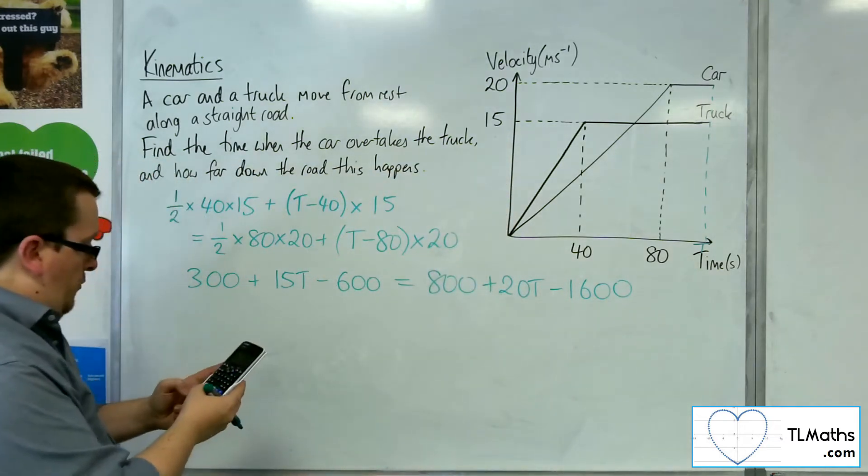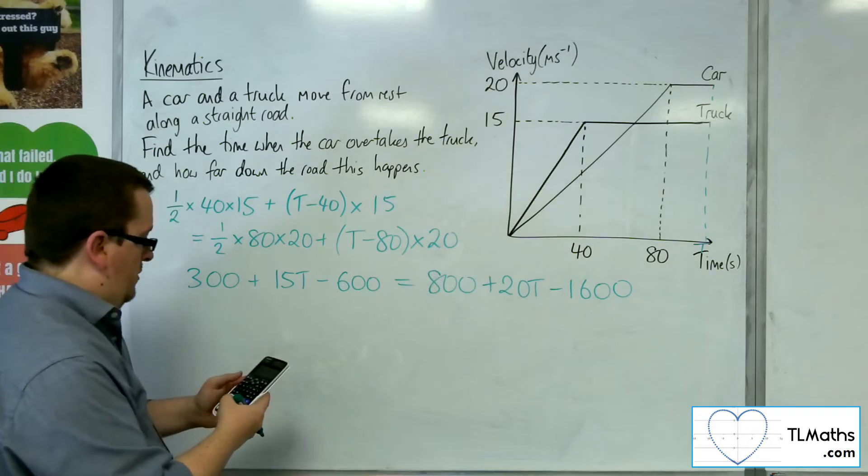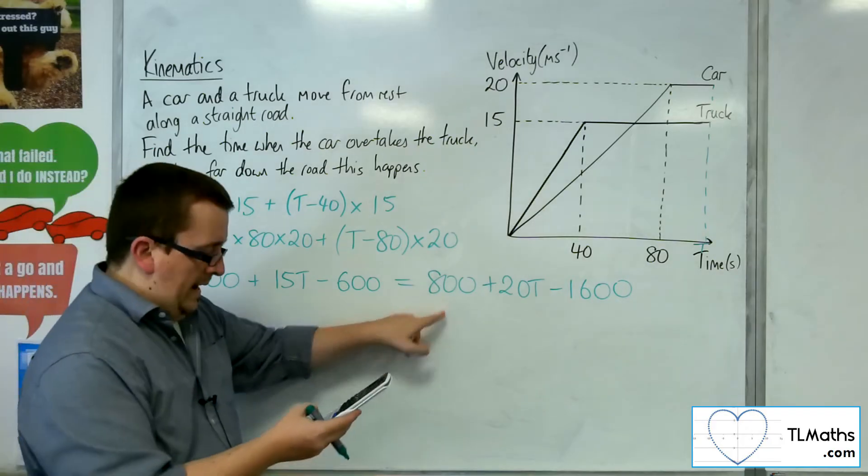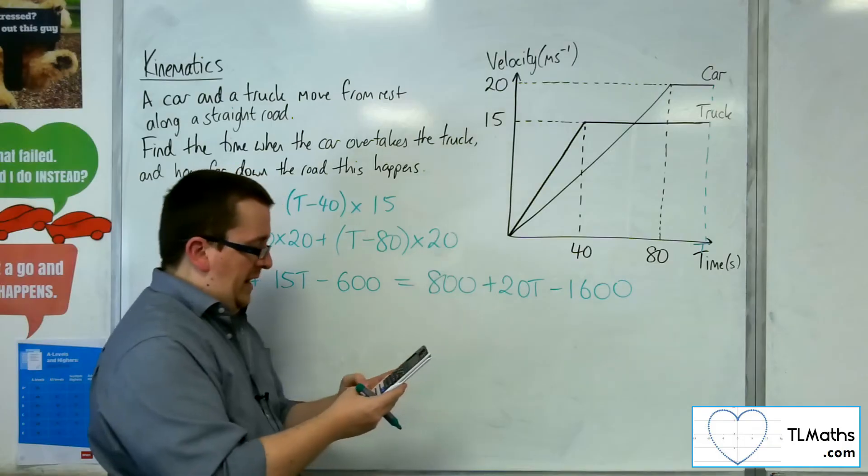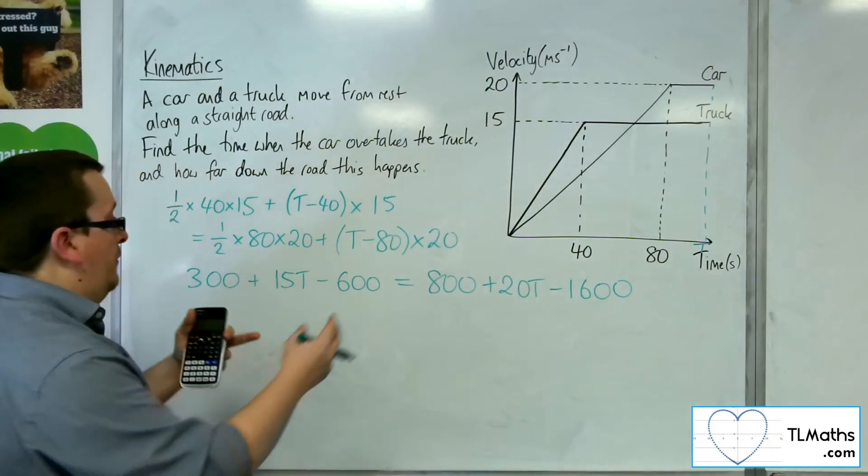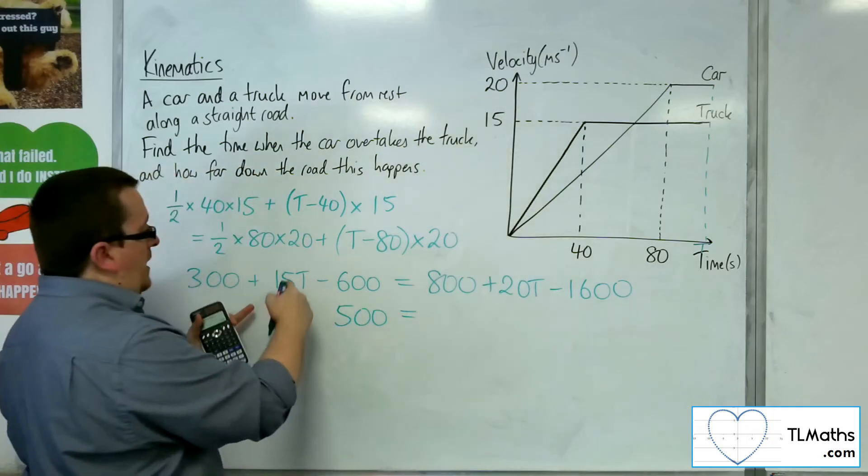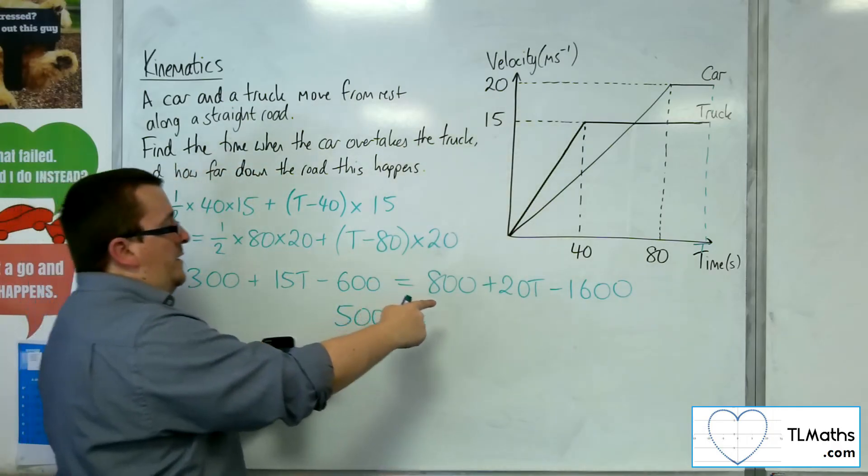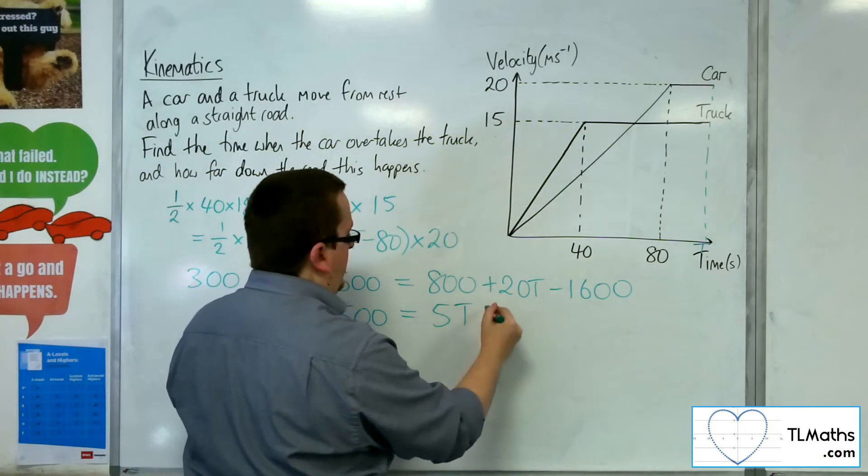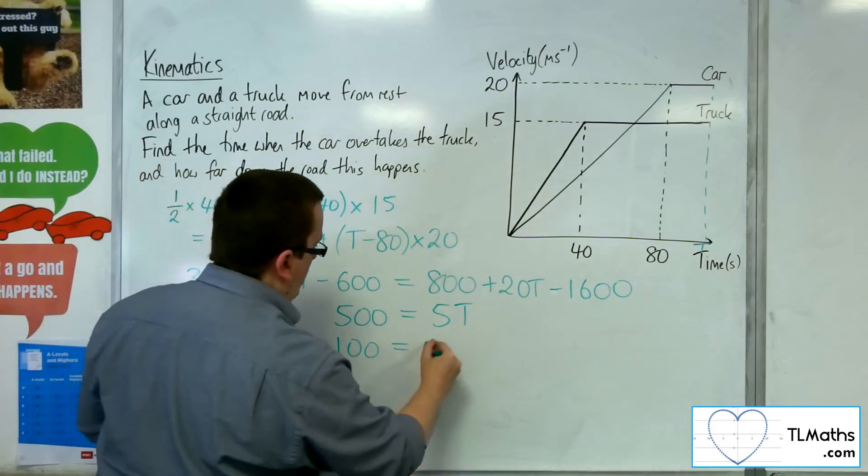So if I do 300 take away 600, and then take away 800, and then add the 1,600, so that effectively moves everything onto the left-hand side. And then I subtract 15T from both sides, leaving me with 5T. So that means that T must be 100.